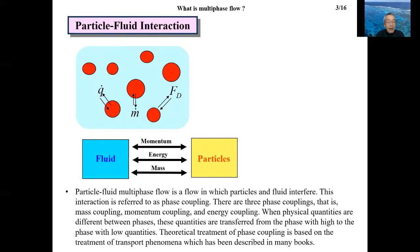The particle-fluid multi-phase flow is a flow in which particles and fluids interact. This interaction is referred to as phase coupling. There are three phase couplings: momentum coupling, energy coupling, and mass coupling.